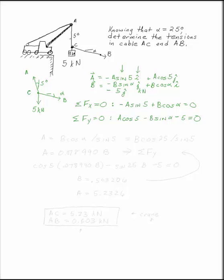The next step is to solve them. If we take that first equation and solve for A, A is B cosine alpha over sine of 5. Now remember, alpha is given, alpha is 25 degrees. That was given in the problem. So this is B cosine 25 over sine 5.